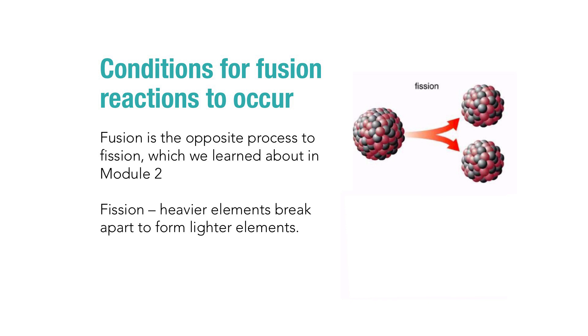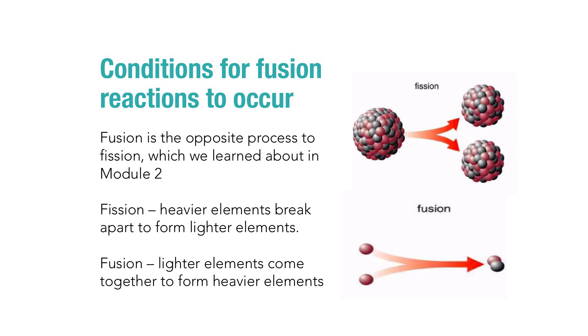First, it's important that we note that fusion is the opposite process to fission, which we learned about in Module 2. In fission, as shown in the diagram, heavier elements will break apart to form lighter elements. Fusion is then taking the lighter elements and bringing them together to form heavier elements, as shown in the diagram. This is why we say that we are combining light nuclei in fusion reactions.